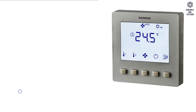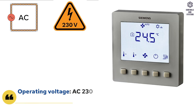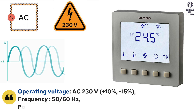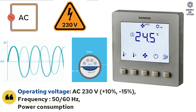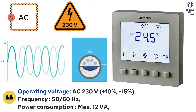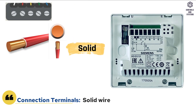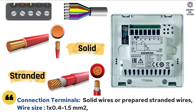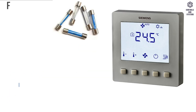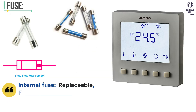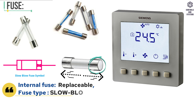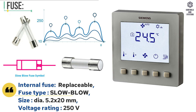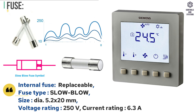Electrical data: operating voltage is AC 230 V (+10% / -15%), frequency is 50 or 60 Hz, and power consumption is maximum 12 VA. Connection terminals accept solid wires or prepared stranded wires, wire size 0.4 to 1.5 square millimeters. Fuse: internal fuse is replaceable, type slow-blow, size 5.2 × 20 mm, voltage rating 250 V, current rating 6.3 A.